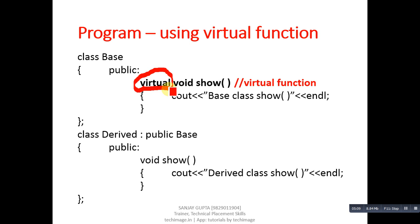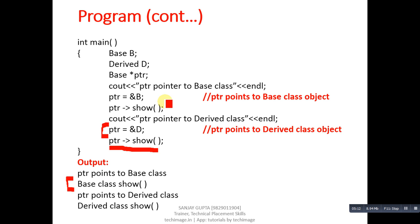Since the show function in base class is declared as virtual, the virtual keyword is now responsible for checking the address assigned into the pointer. Here the address is of derived class type, so the virtual function automatically transfers control to the derived class show function. You can see the output: derived class show message is printed. So whenever you declare a pointer of base class and assign an address of derived class, declare the function as virtual in the base class. This problem arises when functions have the same name and same parameter list — also known as function overriding.